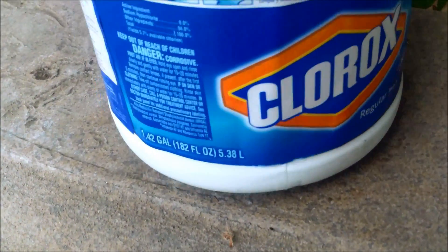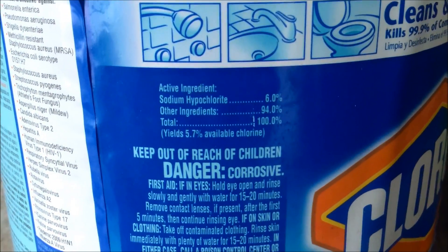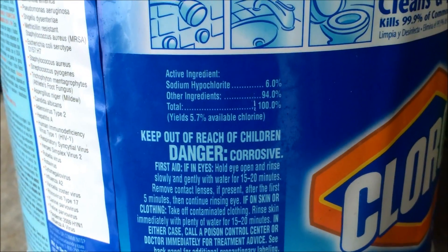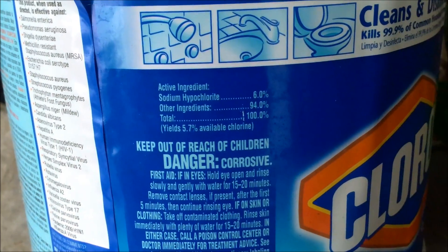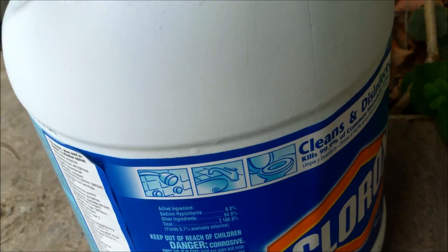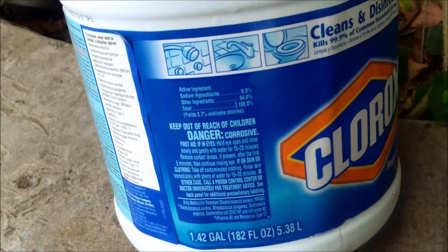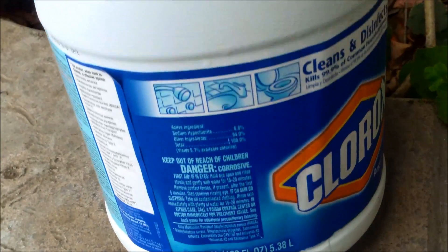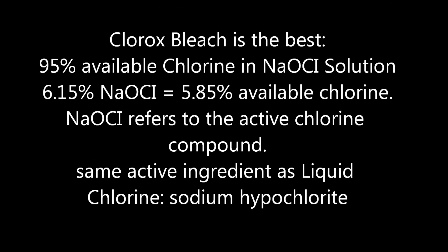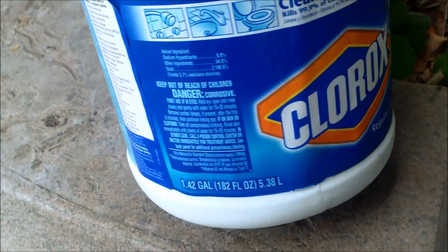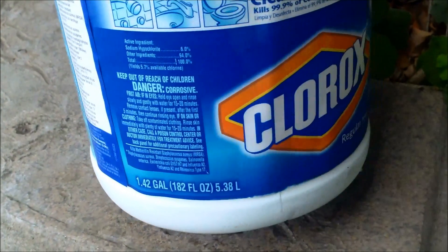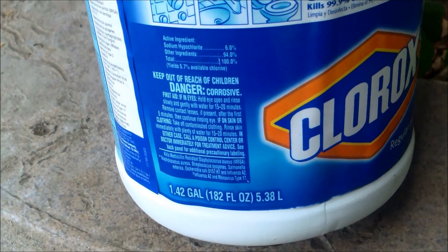Clorox bleach can definitely be used as a sanitizer in your pool. Note that the available chlorine is only 5.7%, and that is actually the chlorine by weight — you don't have to divide this number in half as you do with shock bags. It's calculated differently for liquids. Clorox is about half the strength of the liquid chlorine you buy at a pool store, which is usually 10–12%. Stick with the Clorox brand so you know the exact percentage; a lot of non-registered bleaches are about half as strong.